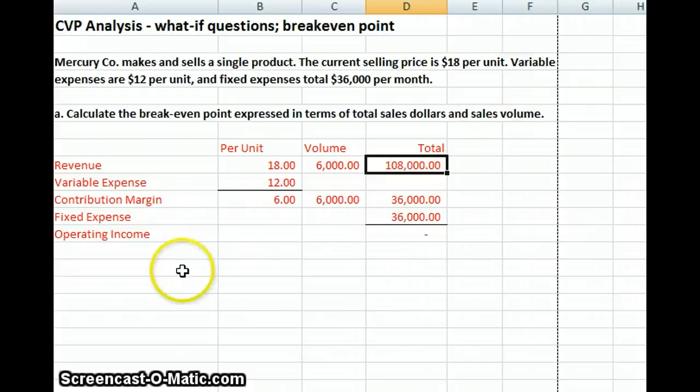What we can do also is we can use our contribution margin ratio. Our contribution margin ratio is what percentage of our sales revenue goes towards contribution margin. We'll just take our contribution margin, 6, divided by our revenue per unit of 18, and we come out with 33 cents. So 33 cents of every dollar goes towards covering fixed cost and profit. To calculate our break-even revenues,